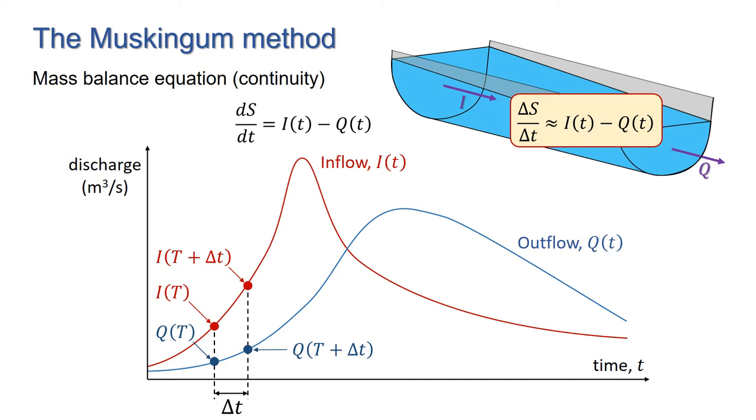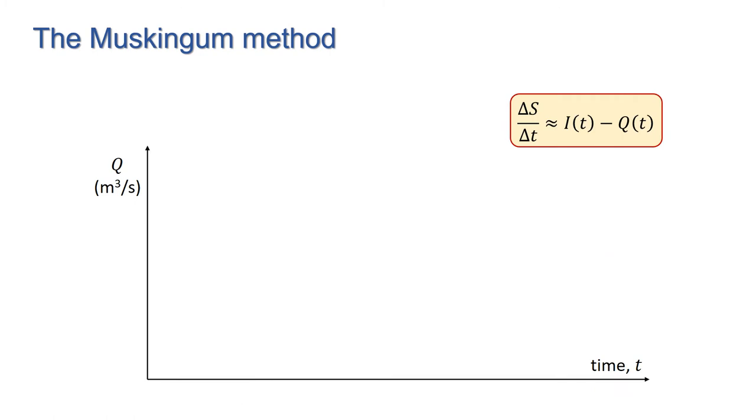There are other lumped methods which use the same approximations such as the pulse method and coefficient method, which we're not going to look at here, but you might like to look up. The Muskingum method combines the continuity equation with a relationship between the storage inflow and outflow of the reach, the discharge storage equation.